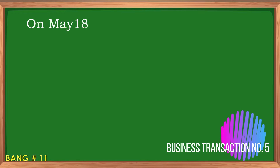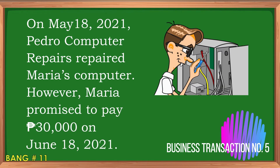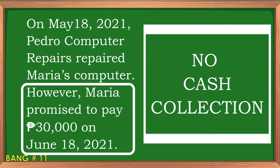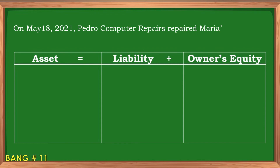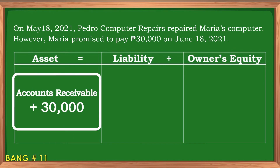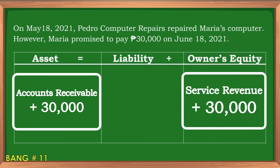What if the service rendered to a customer is on account or not yet paid? Business transaction number five: On May 18, 2021, Pedro Computer Repairs repaired Maria's computer. However, Maria promised to pay 30,000 pesos on June 18, 2021. No cash collection was made. This transaction still affects asset, particularly accounts receivable for 30,000 pesos, and also affects owner's equity under service revenue account since the service was already rendered.